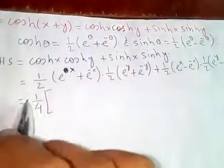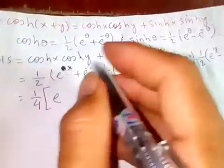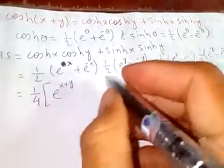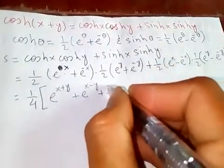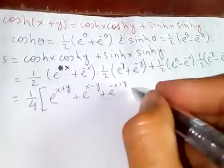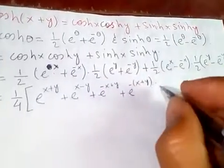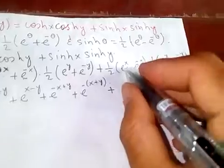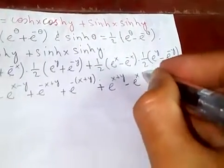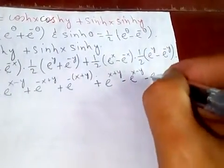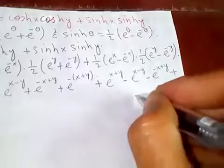With 1/4 factored out, multiplying the exponentials using the rule of same base with different powers being added: we get e^{x+y} + e^{x-y} + e^{-x+y} + e^{-x-y} from the first product, and plus e^{x+y} - e^{x-y} - e^{-x+y} + e^{-x-y} from the second product.